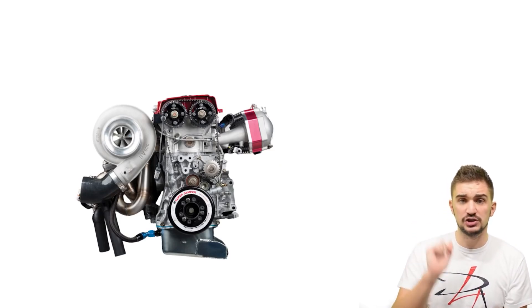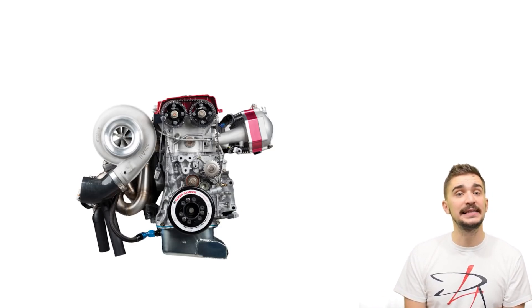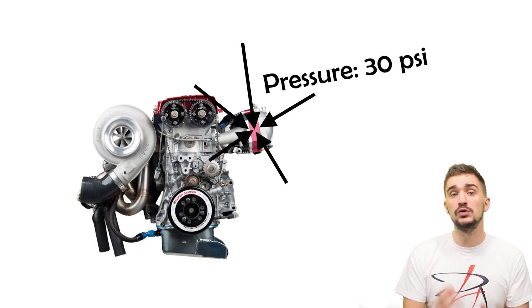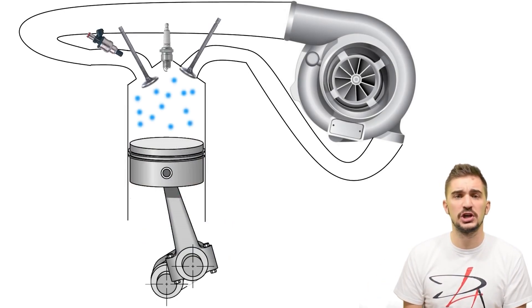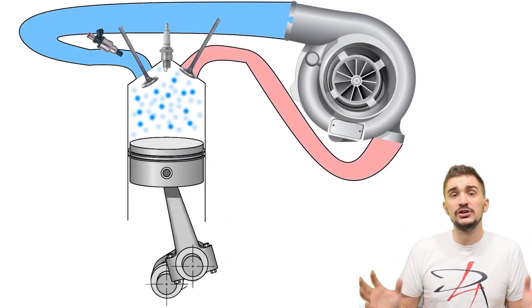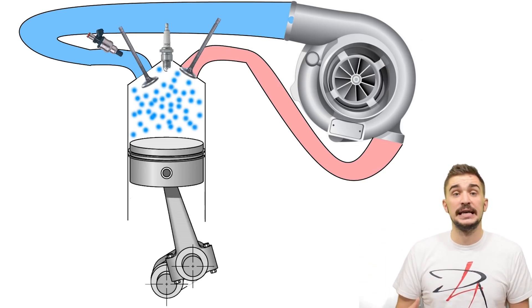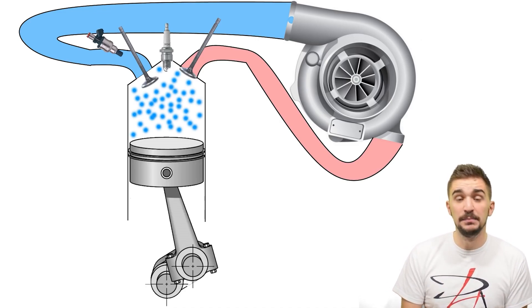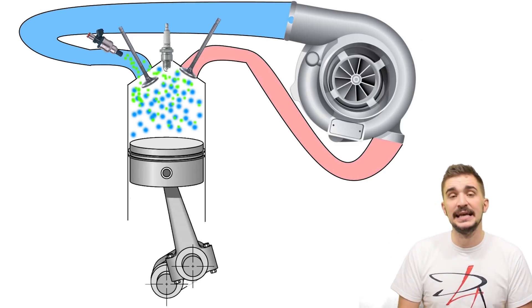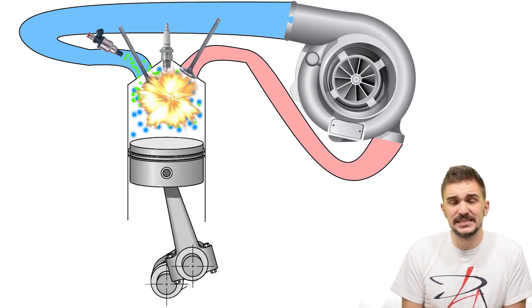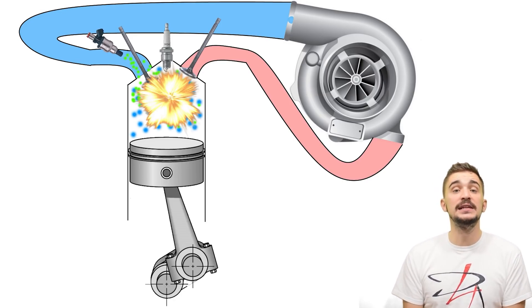Things drastically change when forced induction enters the scene. A turbo or a supercharger can add significant air pressure to the engine. In fact, the air pressure measured inside the intake manifold of a boosted engine can be double or triple that of the atmospheric pressure outside the engine. In essence, a turbo or supercharger stuffs a greater air mass — a greater number of air molecules — into the same space by compressing the air. This increases the pressure inside that space, and because there's more air mass, we can add more fuel, creating a more powerful combustion.